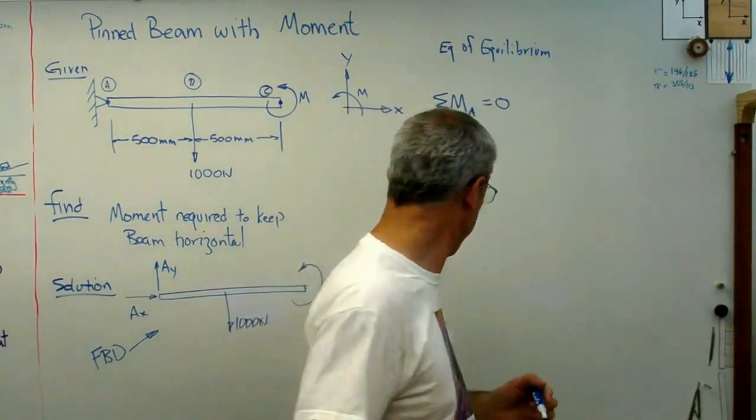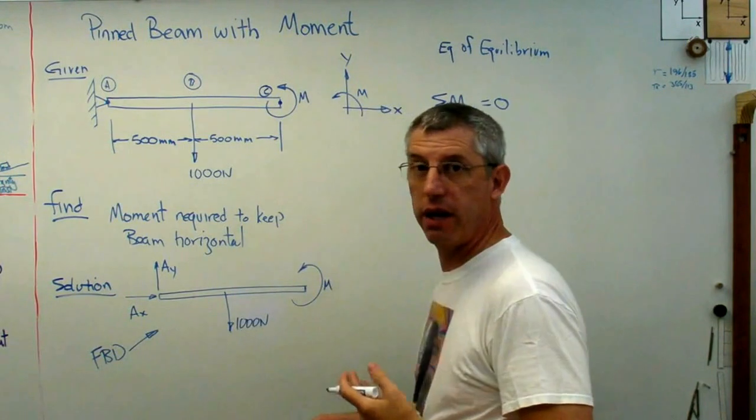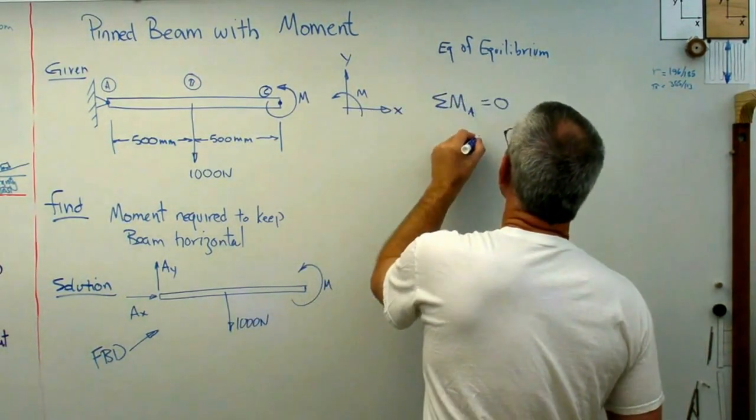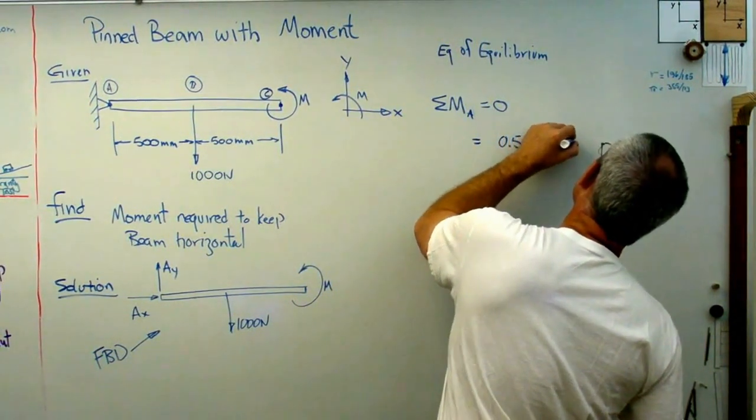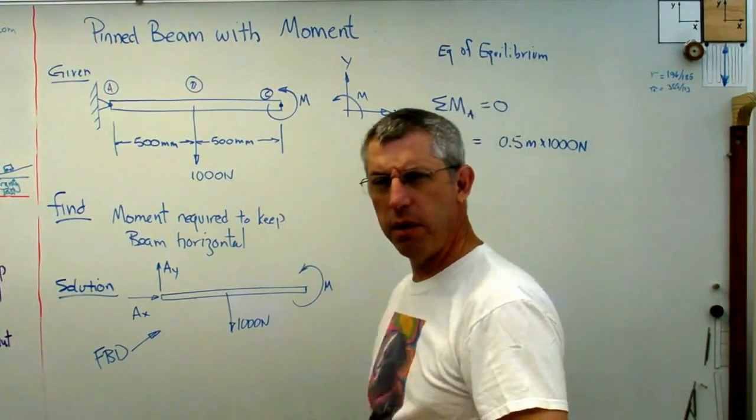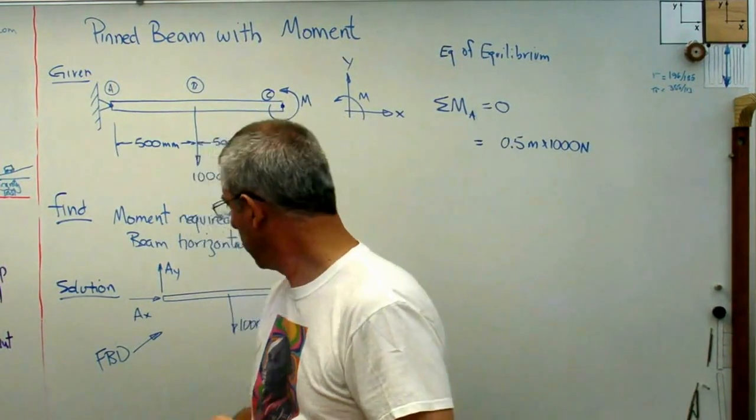I've only got one force acting at a distance, and that's right here, and that's acting at a half a meter, 500 millimeters. So 0.5 meters times 1,000 newtons. Now, is that going to be positive or negative? Let's see.